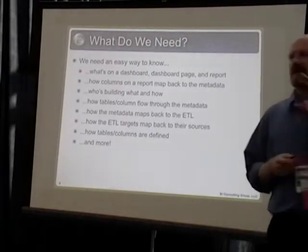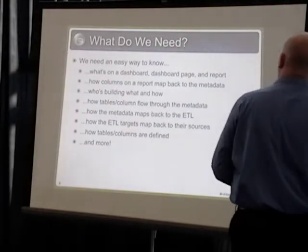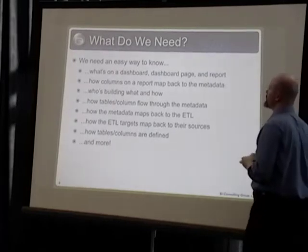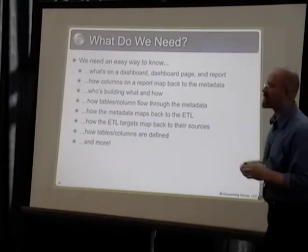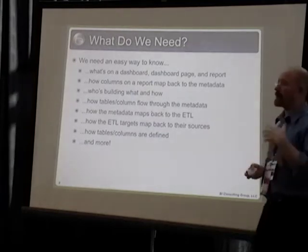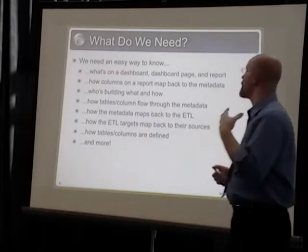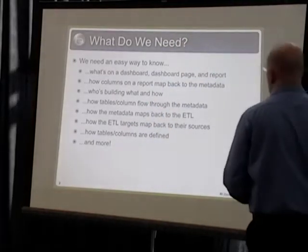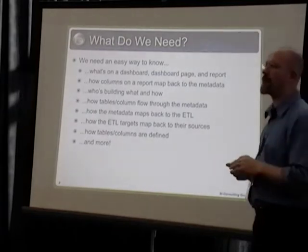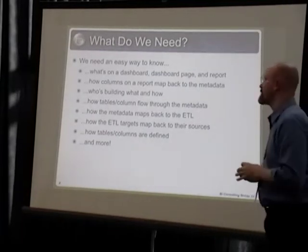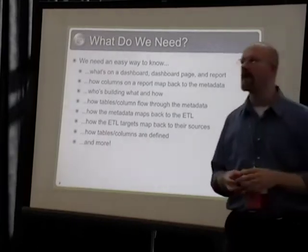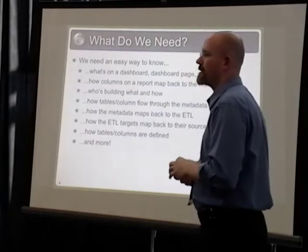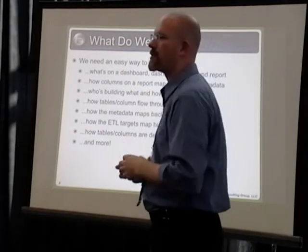So what are the types of things that we need to help us? I made a quick list here because I think these are types of things relevant to have. This is specific to OBIE: when we talk about dashboards, what are actually on a dashboard? What's on a dashboard page? How many reports do I have? How are columns mapping back into the metadata? We've got all these columns in these reports — how's all that defined in the metadata? Who's building what and how are they building it? Are they having to build a lot of calculations on the front end because those calculations don't exist in the metadata? Maybe we should be helping them with some metadata development.